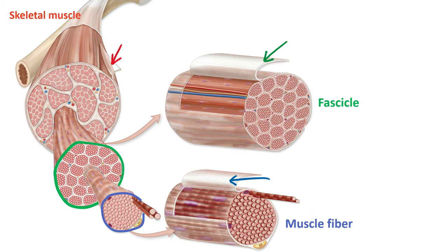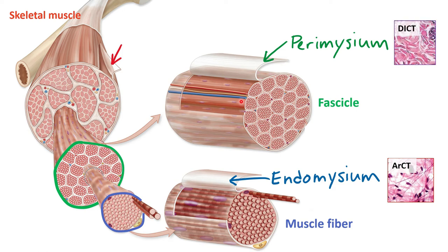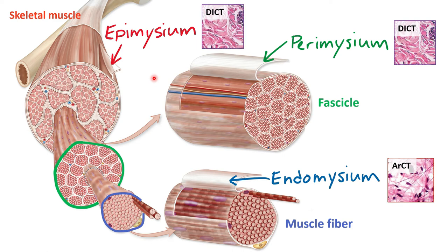The endomysium surrounds each skeletal muscle fiber, binding it to its neighboring cells. It consists of a delicate network of areolar connective tissue and helps to electrically insulate each individual muscle fiber. The perimysium divides the muscle into individual components called fascicles and encloses numerous blood vessels and nerves that supply an individual fascicle; it consists of dense irregular connective tissue. The epimysium is also a layer of dense irregular connective tissue that surrounds the entire skeletal muscle, separates it from surrounding tissues, and bundles all of the fascicles together.